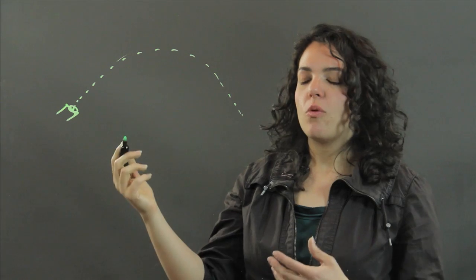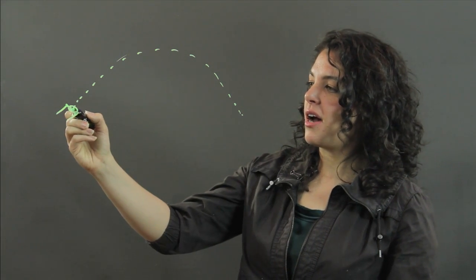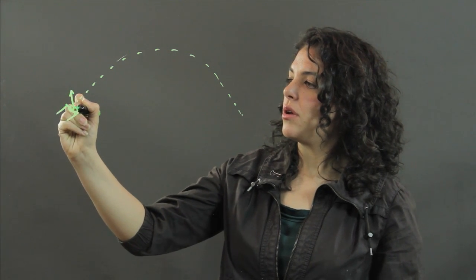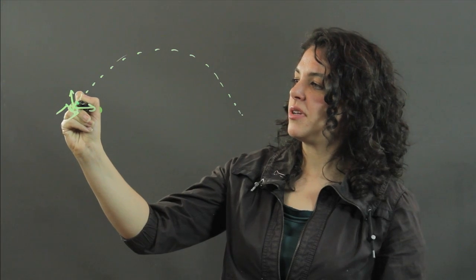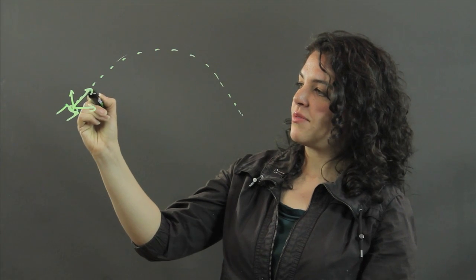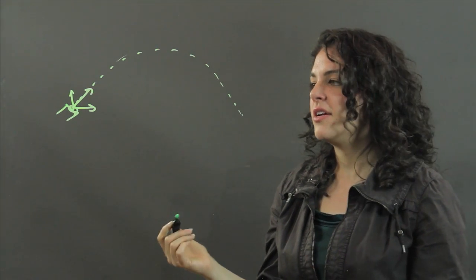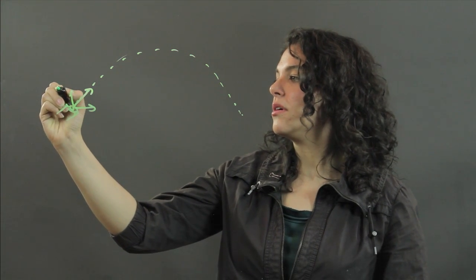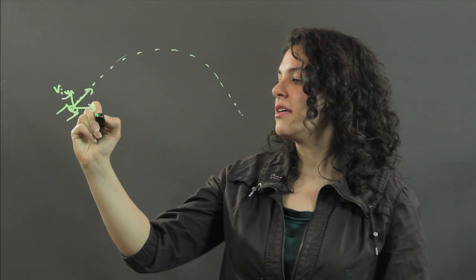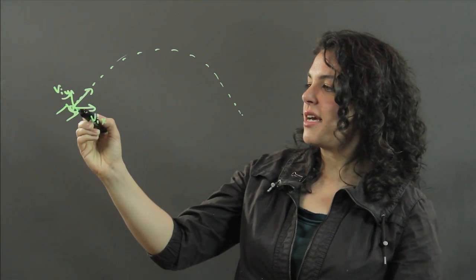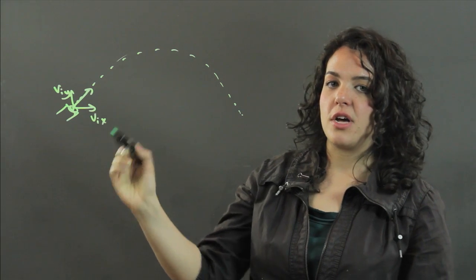Now, when an object is fired out, we have an initial velocity that goes along this vector. And then it breaks down into components. We have initial velocity y and initial velocity x. So this is the x component of our initial velocity.